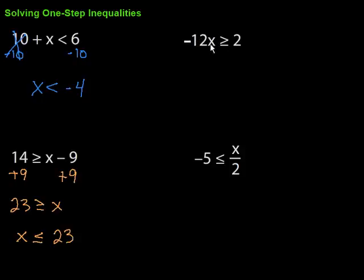So in this case, we've got negative 12 times x is greater than or equal to 2. That negative 12, it's times. So to get rid of it, we're going to divide. We don't want to add because this is multiplication between these two. Sometimes people want to try and add that. That doesn't help us.